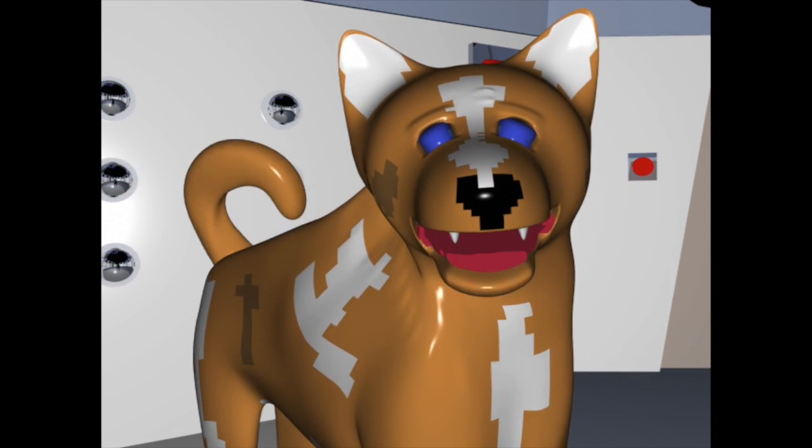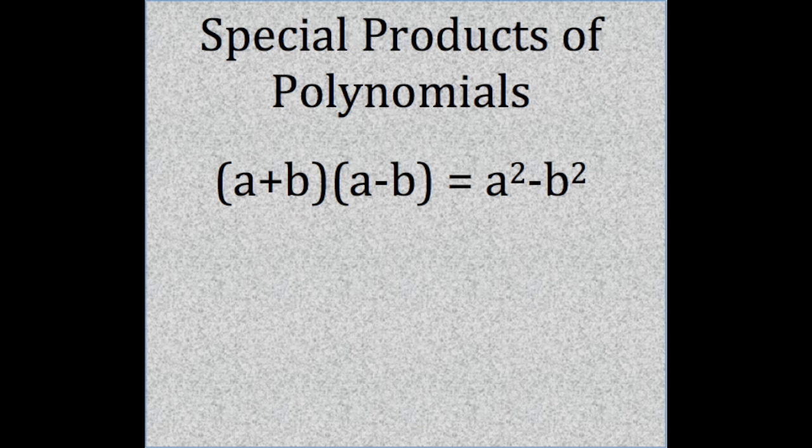Let's take a look at the first pattern. In the pattern of (a+b)(a-b), notice that both binomials are exactly the same except for the plus and minus within them.